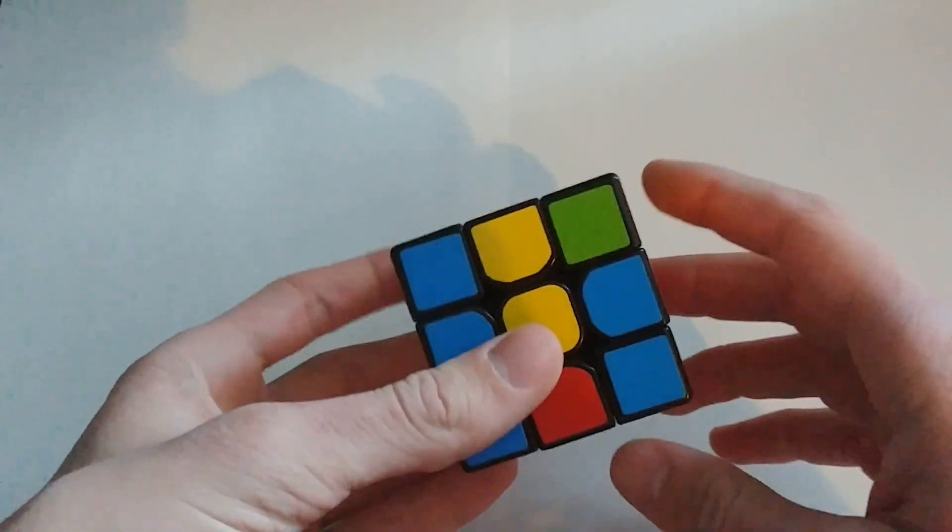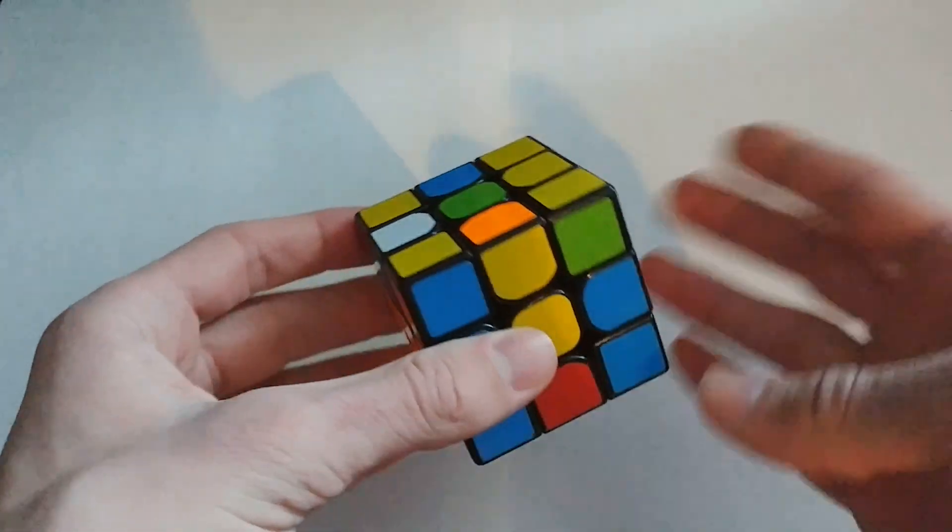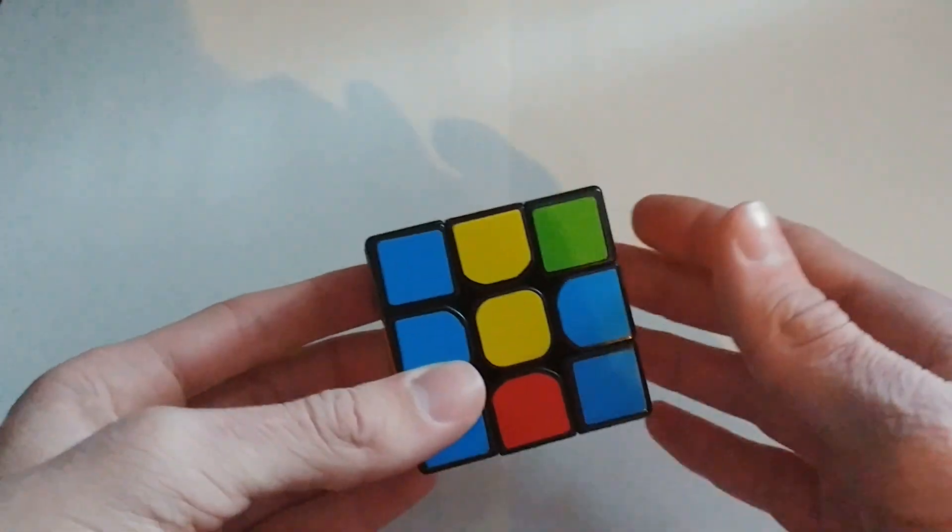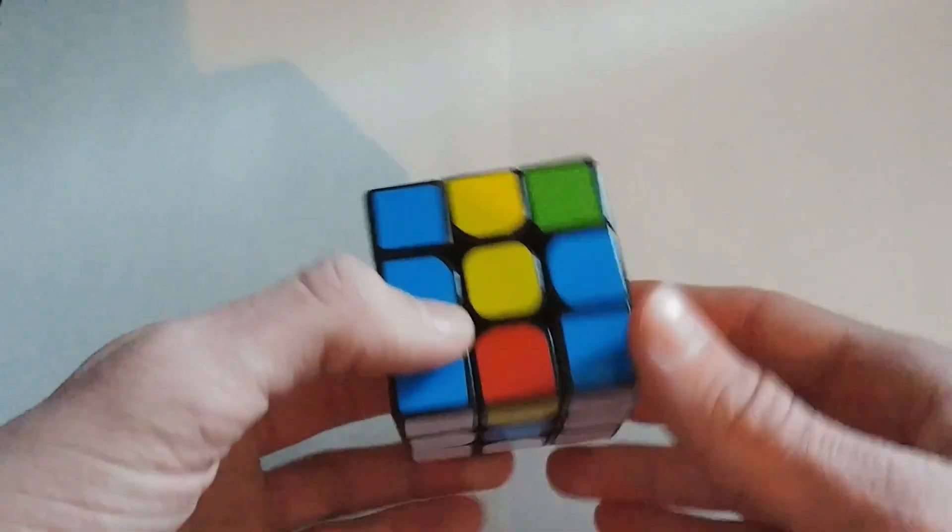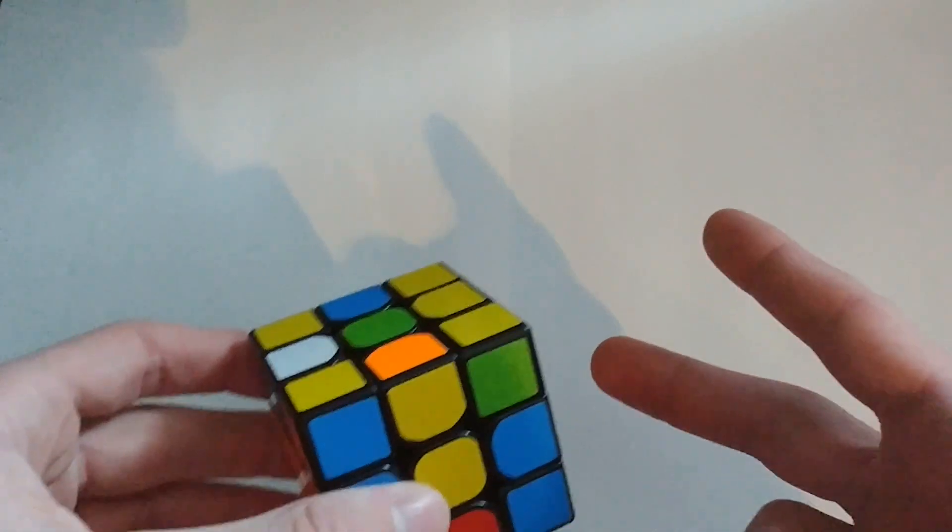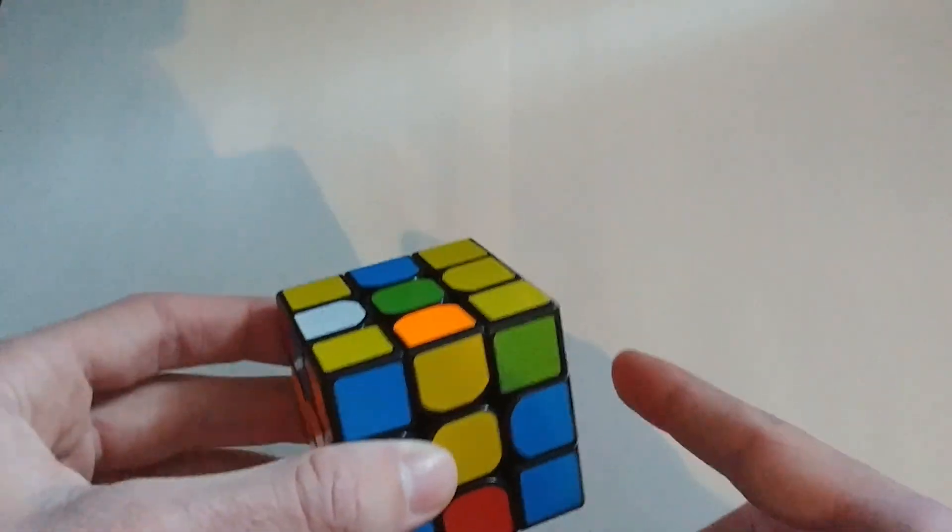All right, there may be a slight change in angle and lighting because I forgot to film this case until after I was almost done editing the video. So anyway, there are two permutation cases you can get. The first one is this.